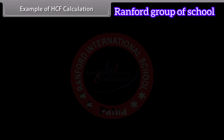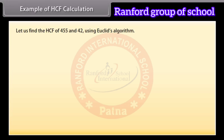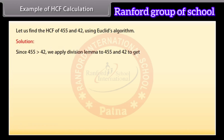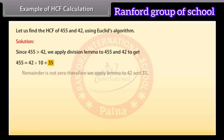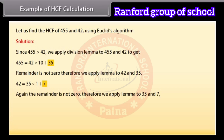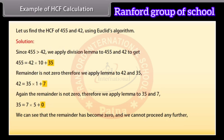Let us find the HCF of 455 and 42 using Euclid's algorithm. Since 455 is greater than 42, we apply the division lemma to get 455 equals 42 into 10 plus 35. The remainder is not 0, so we apply the lemma to 42 and 35: 42 equals 35 into 1 plus 7. Again the remainder is not 0, so we apply the lemma to 35 and 7: 35 equals 7 into 5 plus 0. The remainder is now 0, so the HCF of 455 and 42 is the divisor at this stage, which is 7.